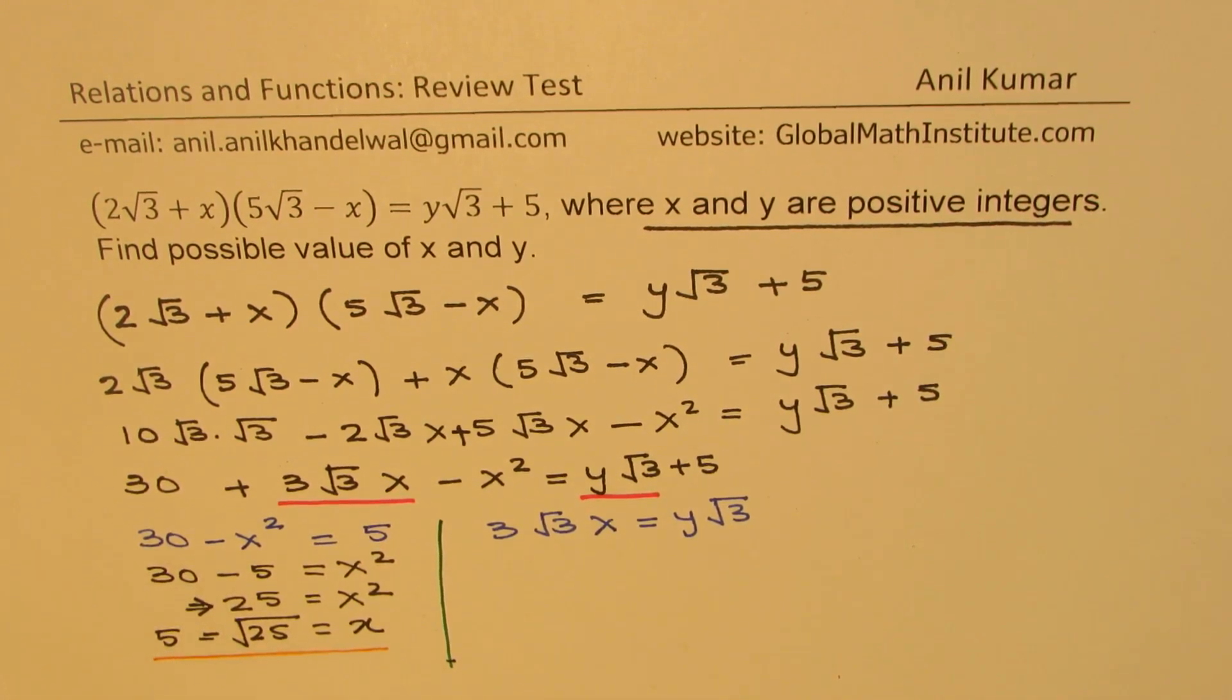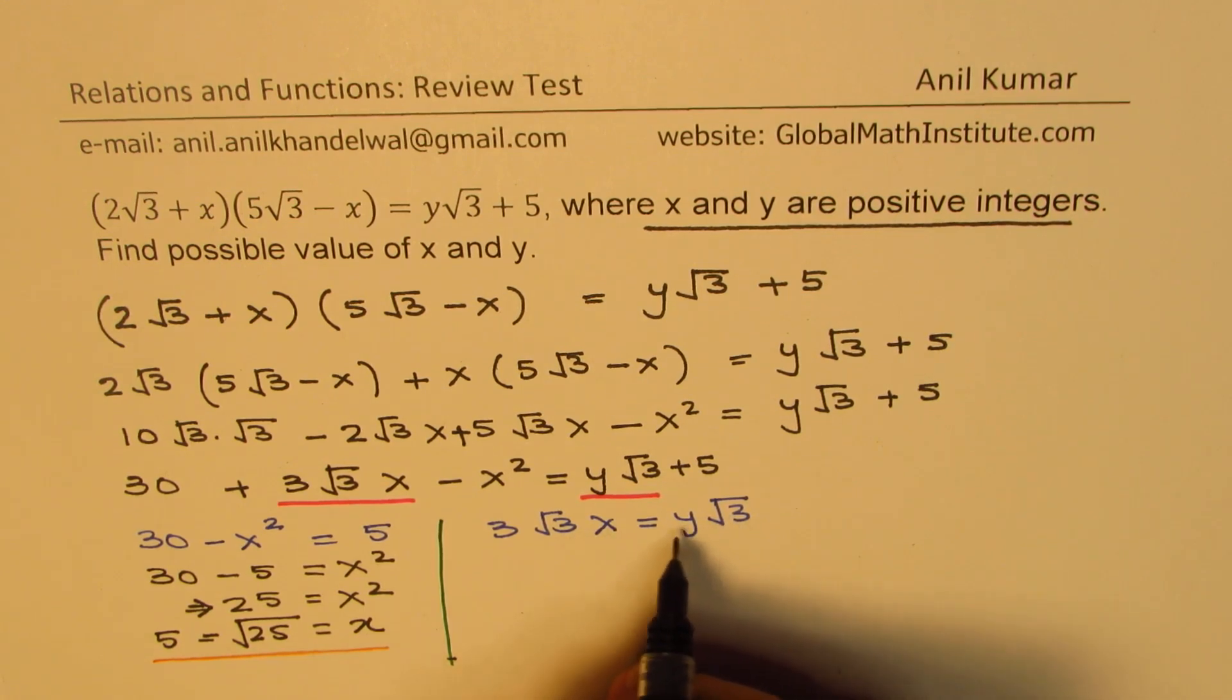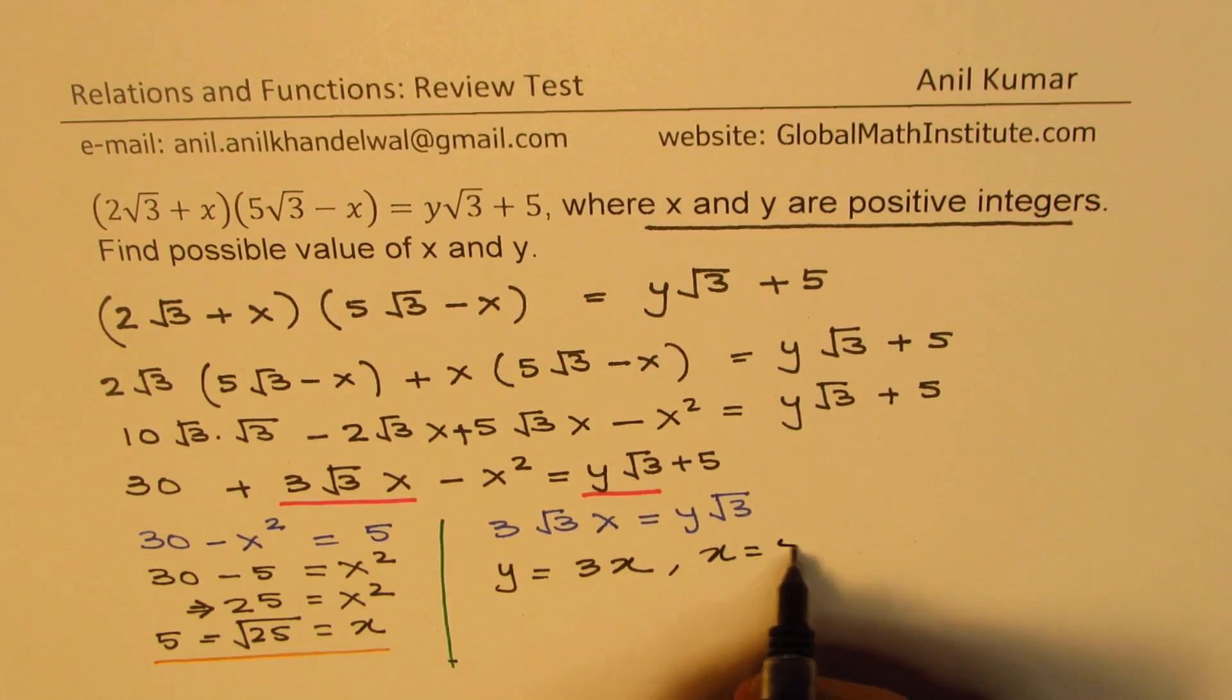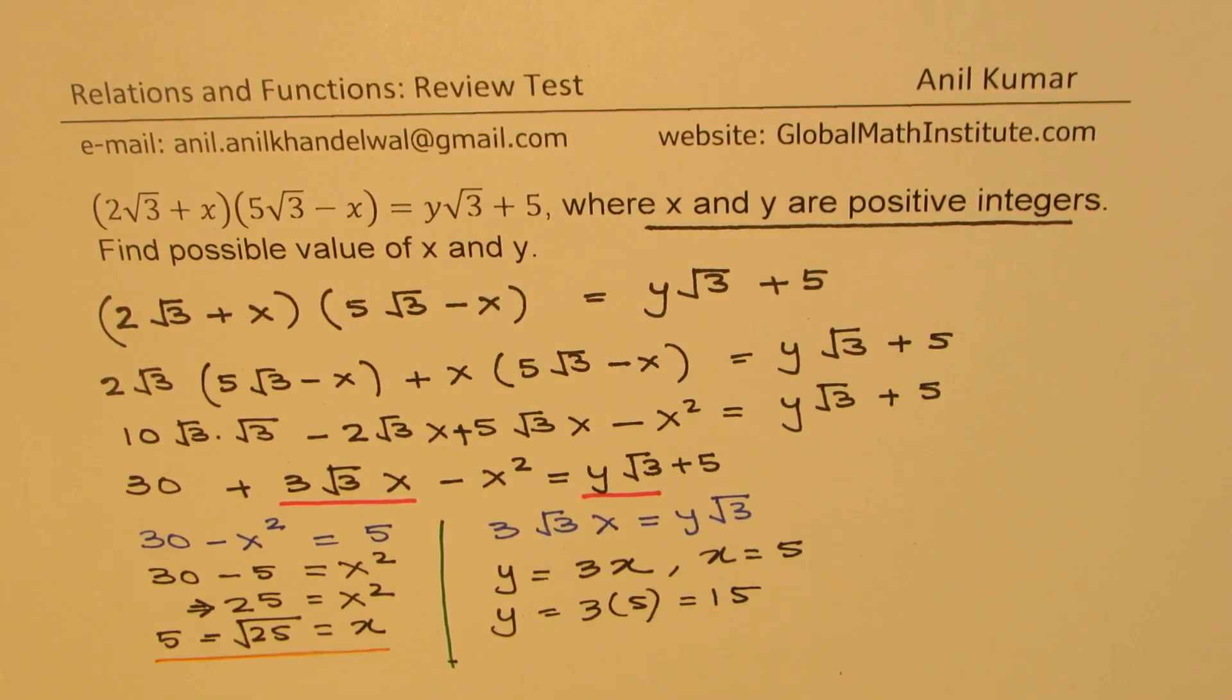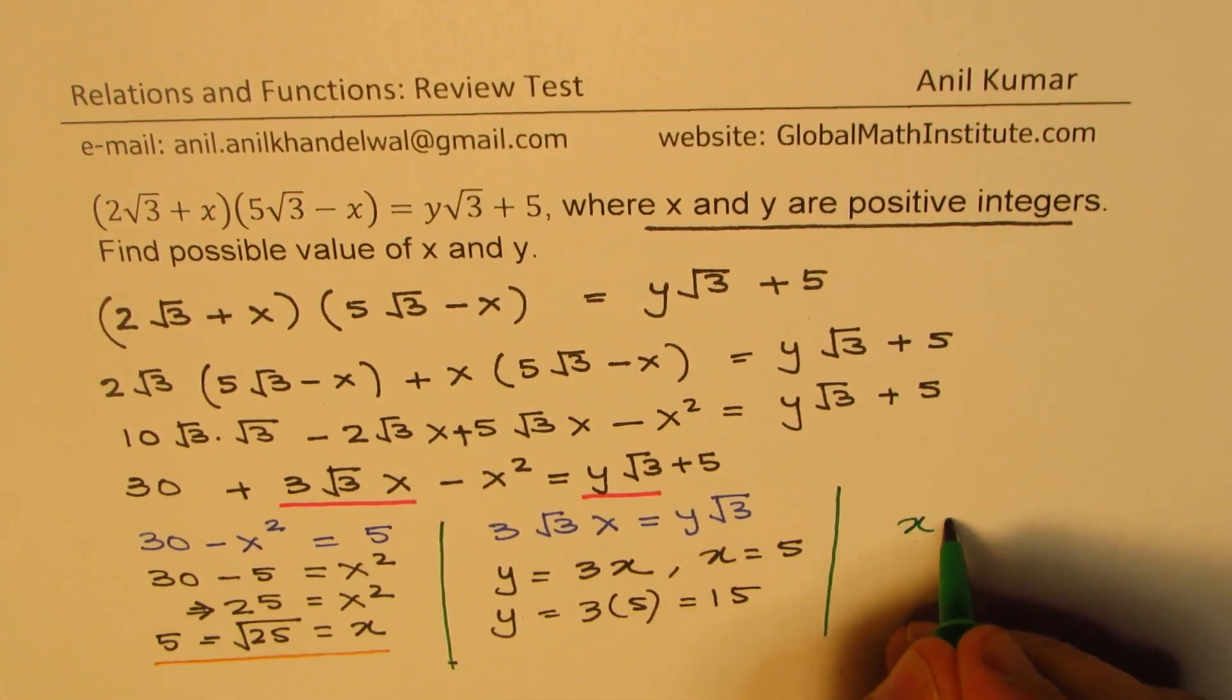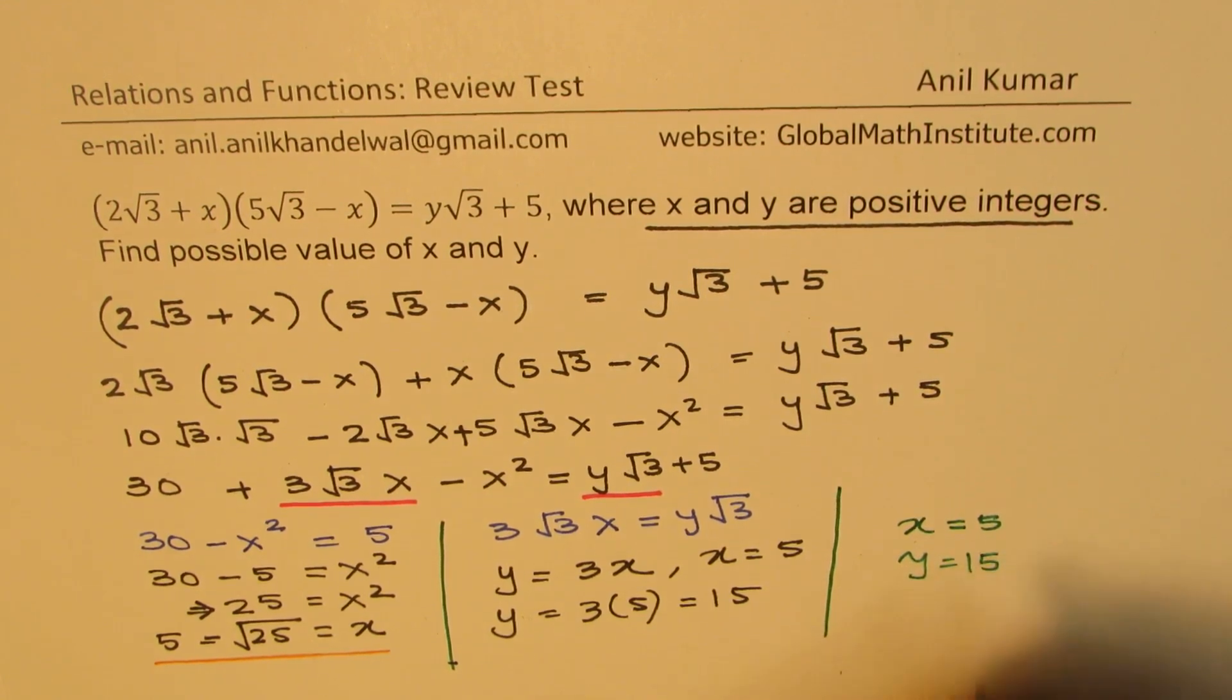So we got one of our values, which is x equals to 5. And now we can find y from the other equation. Substituting 5 here, what do we get? So we can actually cancel out √3 and √3. So we can say y equals to 3x, correct? Perfect. And since x is equal to 5, we can say y is equal to 3 times 5, which is 15. Perfect. So that is how we are going to solve this equation. So we get x equals to 5 and y equals to 15 as our solution.